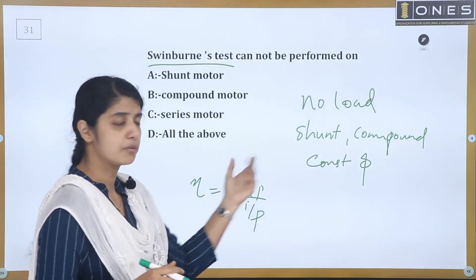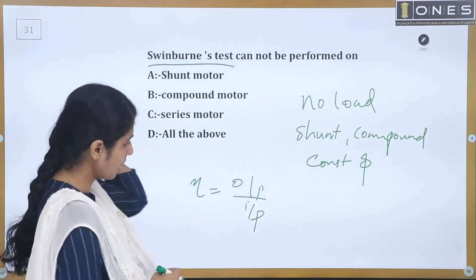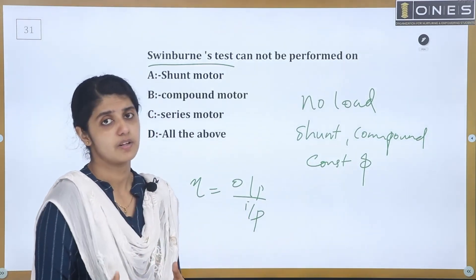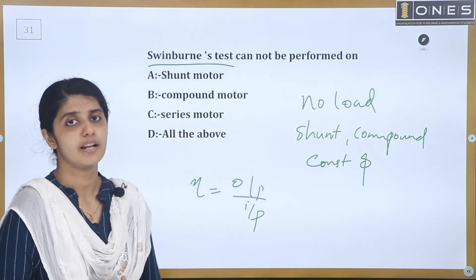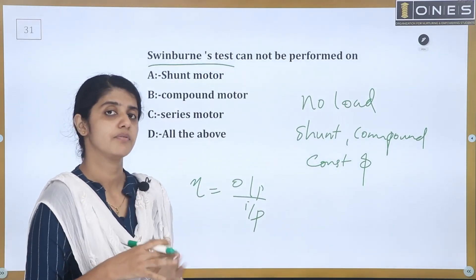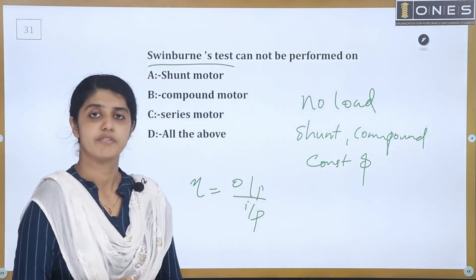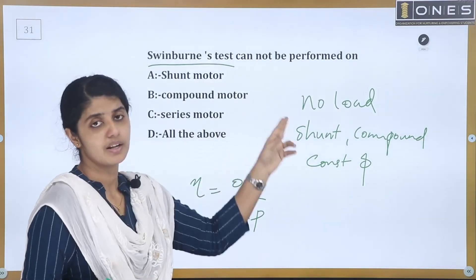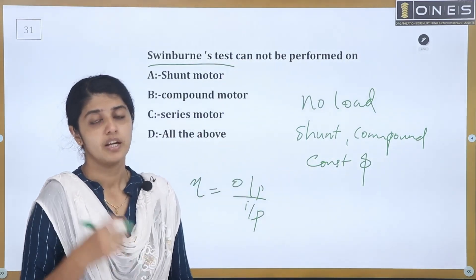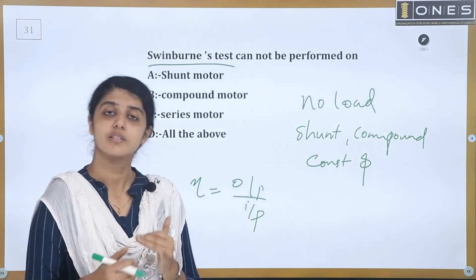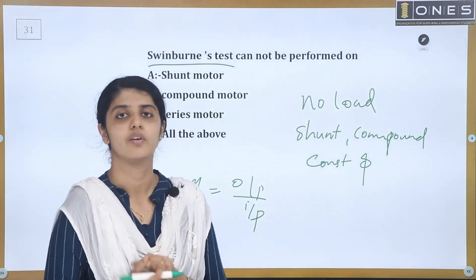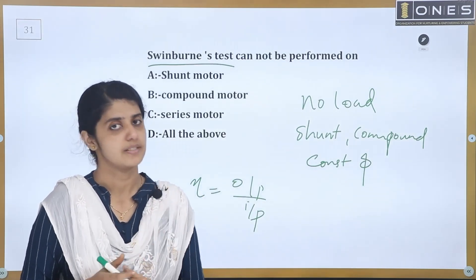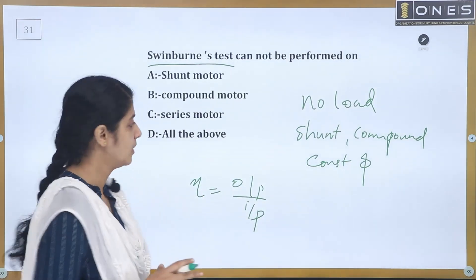Efficiency equals output minus losses, or output divided by input — that is, output divided by output plus losses. We put in the total losses, then we perform this test. The machine will be operated as a motor.